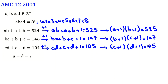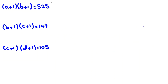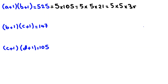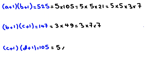Now we prime factorize these numbers. We have (A+1)(B+1) = 55 = 5 times 11. And (B+1)(C+1) = 147 = 5 times 5 times 3 times 7 — wait, 147 = 3 times 7 times 7. And (C+1)(D+1) = 105 = 5 times 3 times 7.